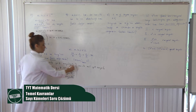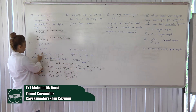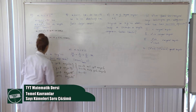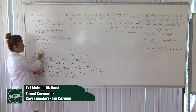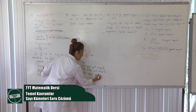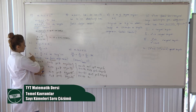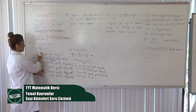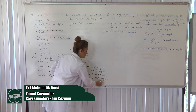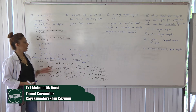Z'ye eksi 14 veriyorum: 42 bölü eksi 14 = eksi 3, 7 daha X = 4. Y: eksi 14 bölü 7 = eksi 2, 6 daha Y = 4. X artı Y = 8. Z'ye eksi 21 veriyorum: 42 bölü eksi 21 = eksi 2, 7 daha X = 5. Y: eksi 21 bölü 7 = eksi 3, 6 daha Y = 3. X artı Y = 8 yine. Z'ye eksi 42 verince: eksi 42 bölü eksi 42 = eksi 1, 7 daha X = 6. Y: eksi 42 bölü 7 = eksi 6, 6 daha Y = 0. X artı Y = 6. Yine iki değer çakıştı (8 ve 6). Demek ki iki tane negatiften, iki tane de pozitiften geldiği için toplamda dört tane farklı değer alabiliyormuş X artı Y.